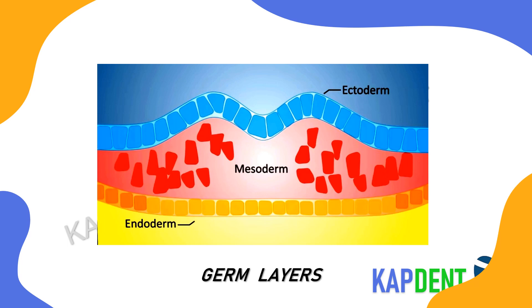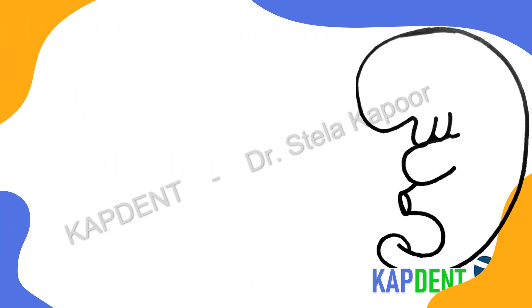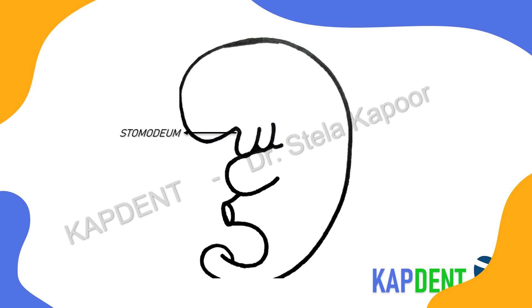Thankfully that does not happen because of the folding that occurs in the cephalic region, leading to the shrimp-like structure of the fetus as shown in the figure. Replacing this with my simplified diagram, you can make out a pit present which is actually the stomodium — our future oral cavity.